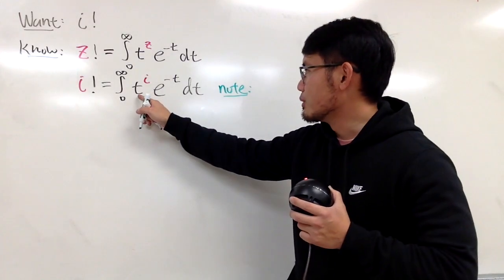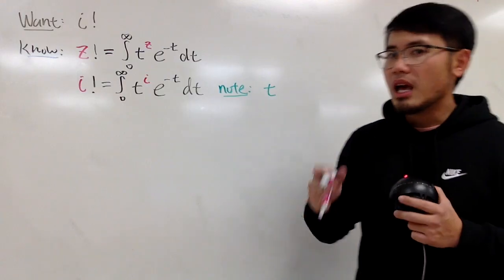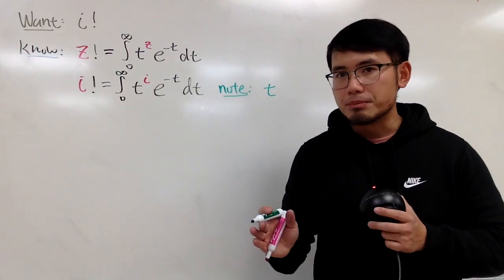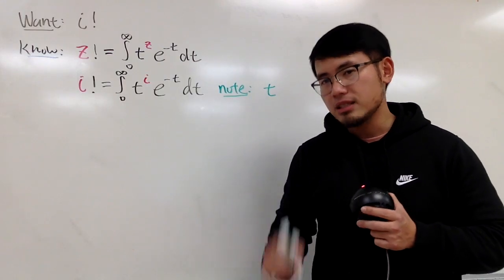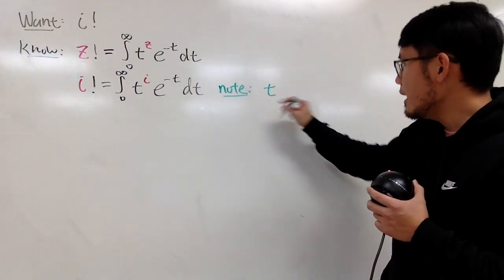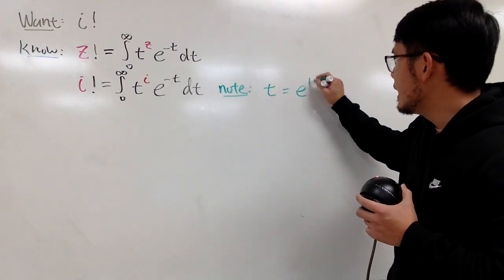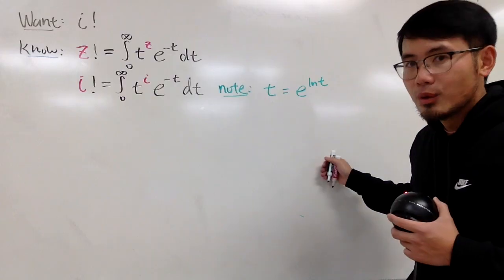Now, let's take a look at t to the i's power. As you all know, we don't like to work with base t. We like to work with base e. So, first, let me look at t as e to the ln t's power. Why? Because, you see, e and ln cancel, we get the t back.